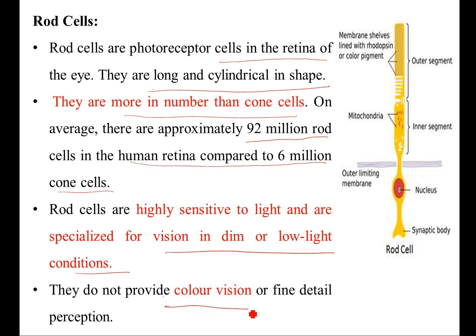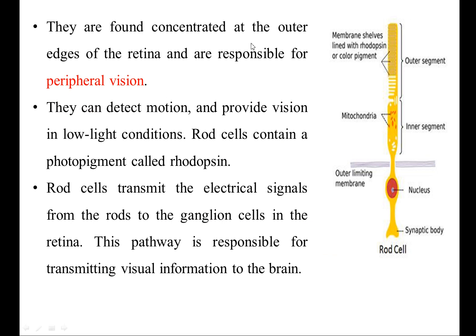Rod cells do not provide color vision or fine detail perception. They are found concentrated at the outer edge of the retina and are responsible for peripheral vision. They can detect motion and provide vision in low light conditions. Rod cells contain a photopigment called rhodopsin. They transmit electrical signals from the rods to the ganglion cells in the retina, which is responsible for transmitting visual information to the brain.